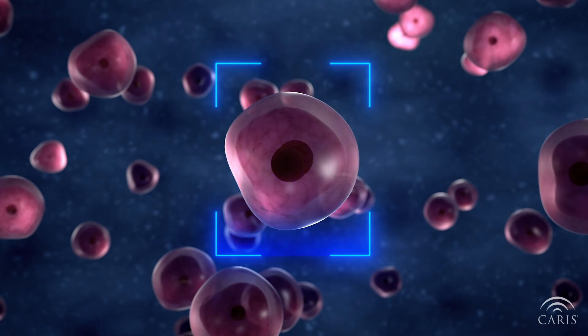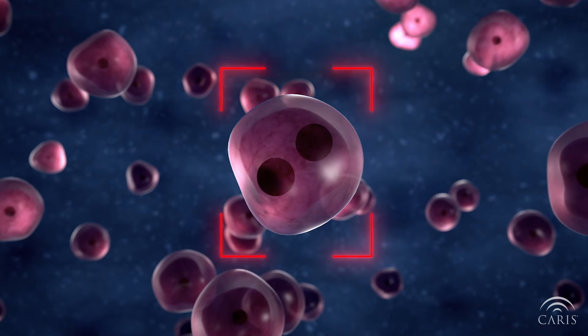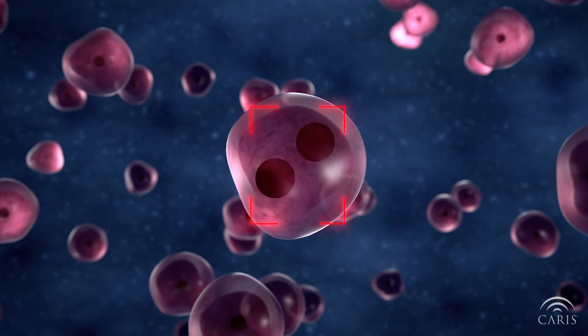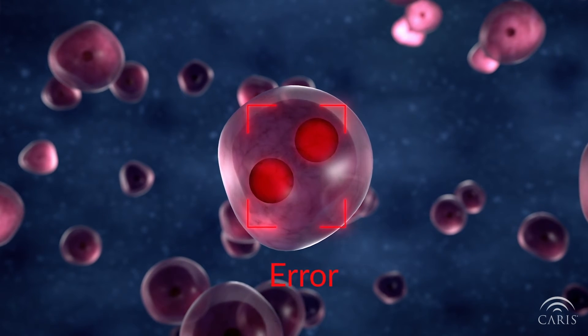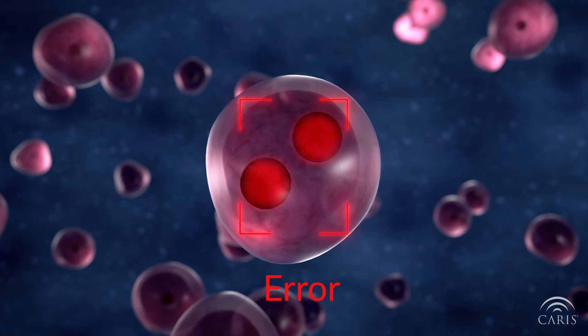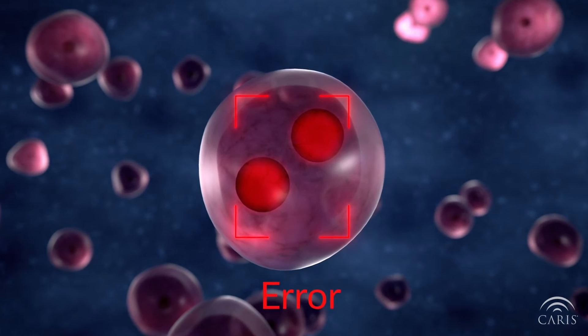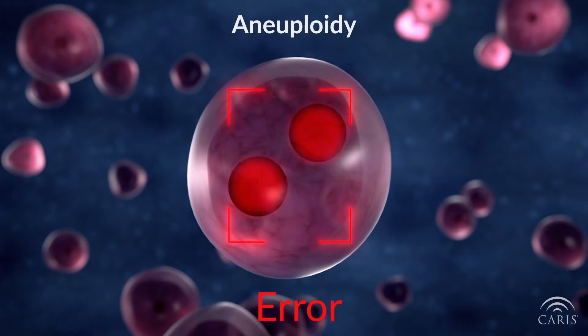If something goes wrong during cell division and chromosomes are not divided evenly, there will be an abnormal number of chromosomes in each daughter cell. This is called aneuploidy.